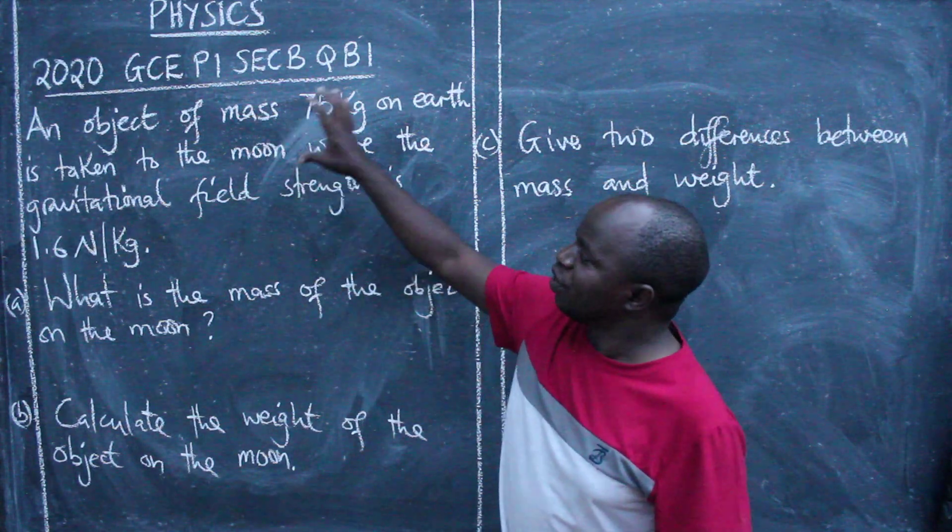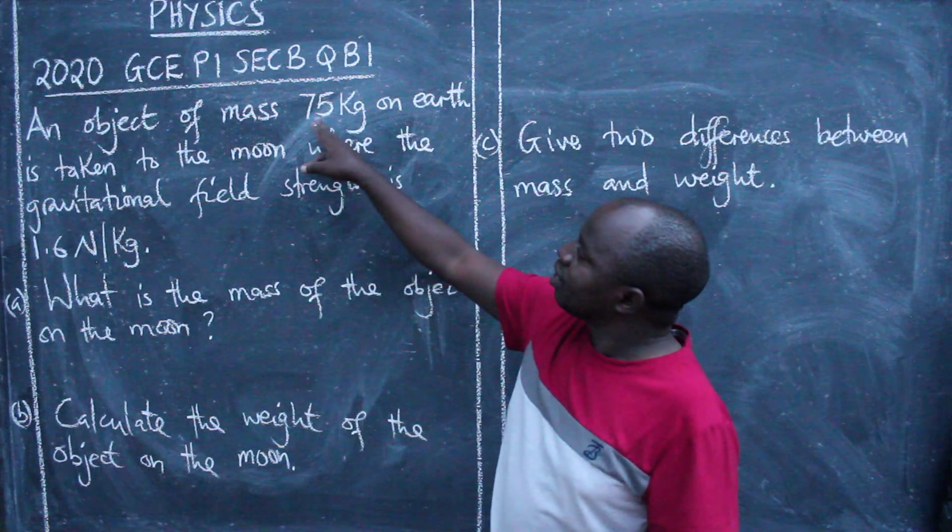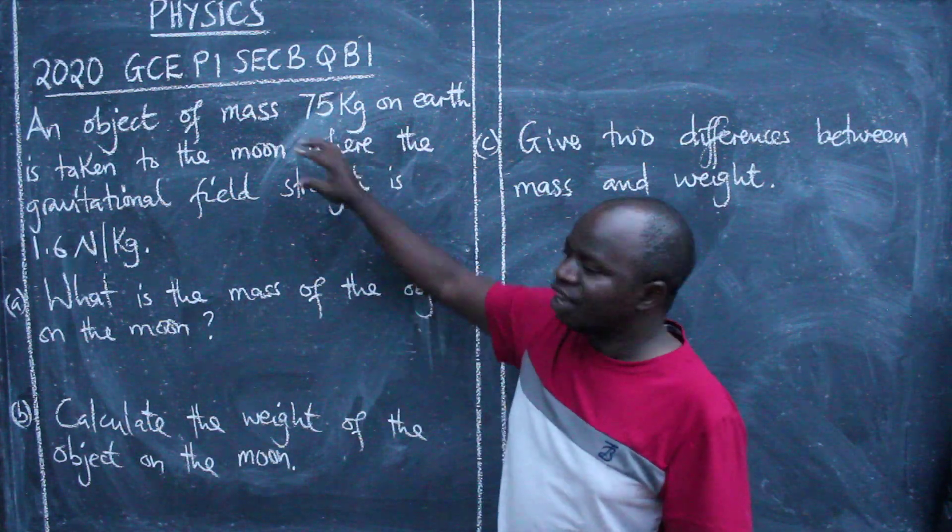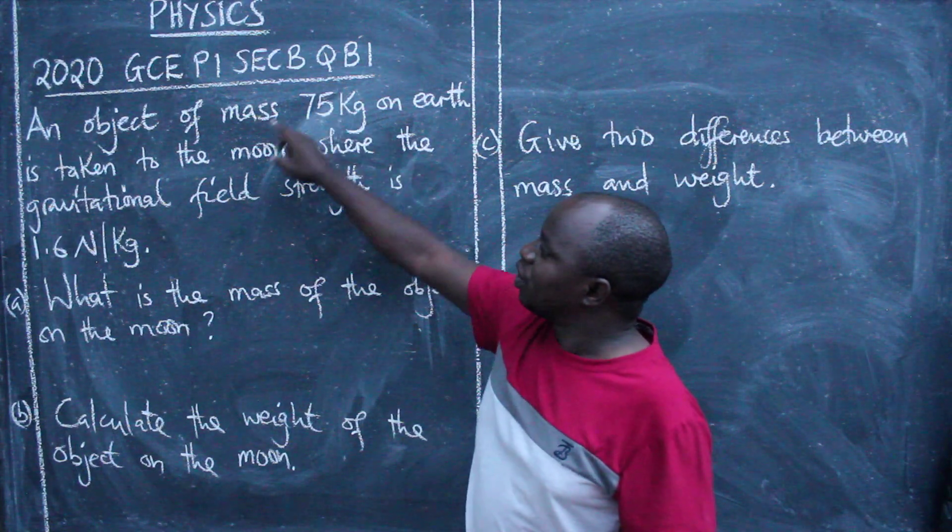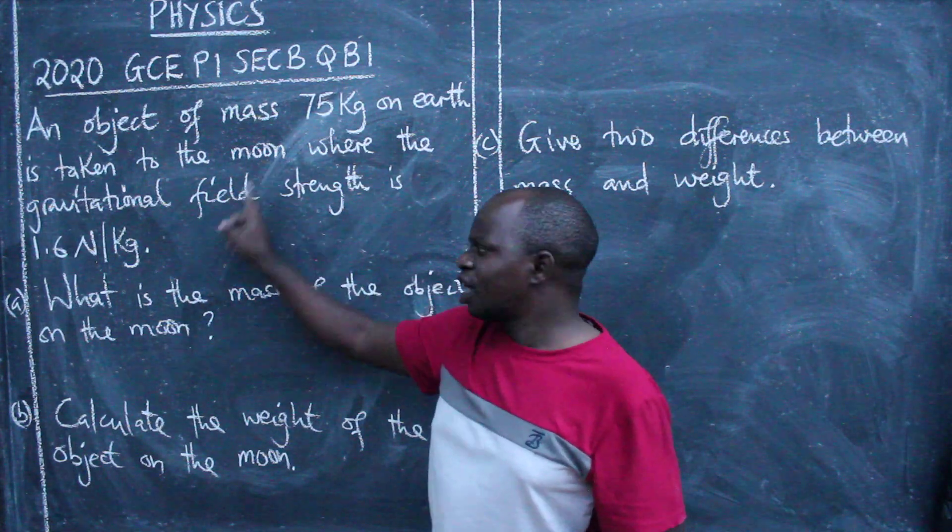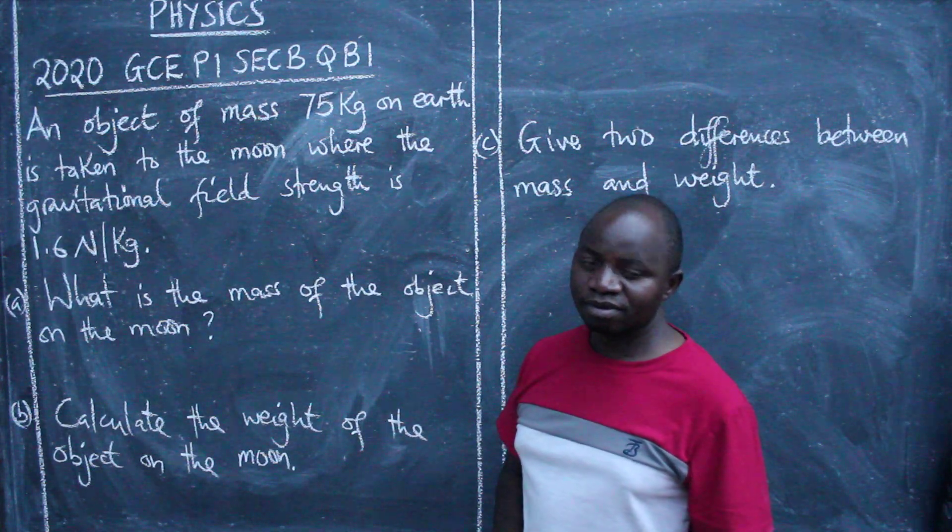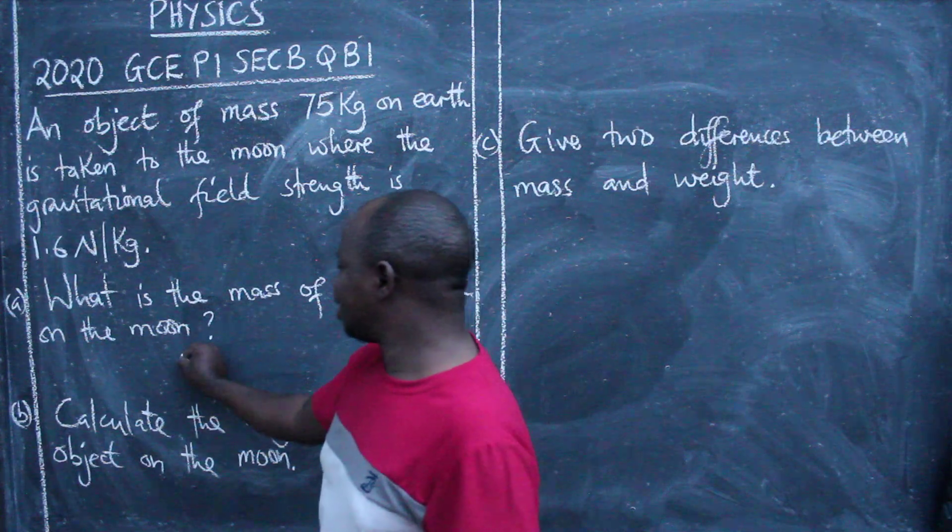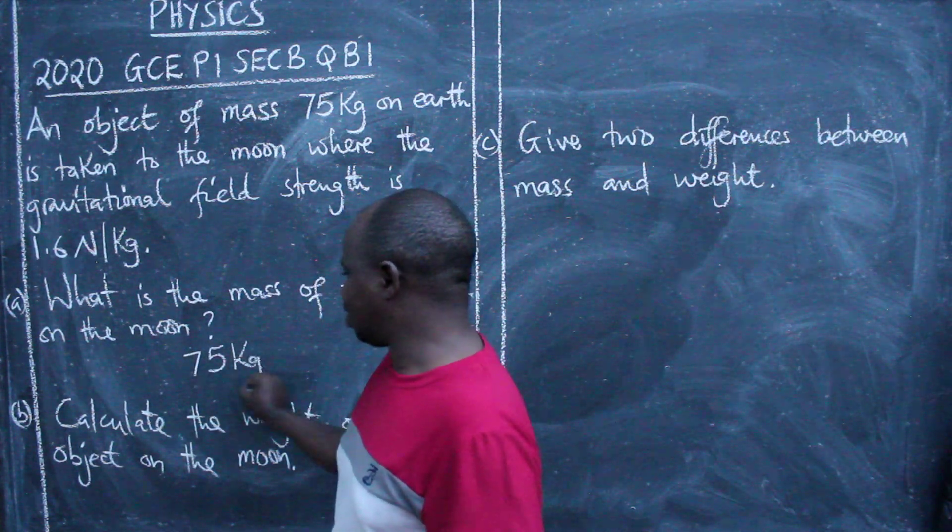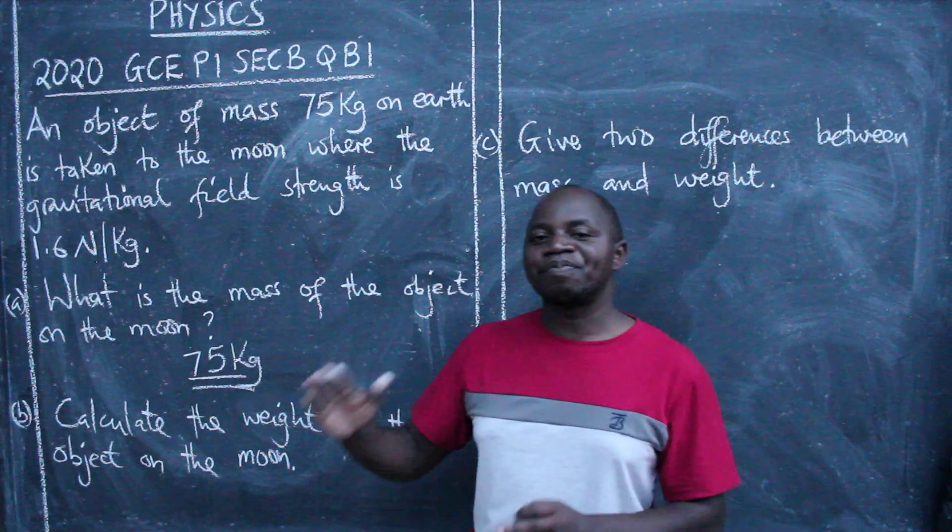The information has been provided here. You have this object on earth weighing 75 kg. You take the same object to the moon. What do you think will be its mass? The answer to this will be 75 kg. Why? Mass will remain constant.